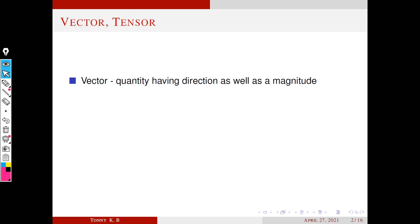What is a vector? A vector is a quantity having direction as well as magnitude. For example, velocity is a vector because velocity contains two quantities: one direction and one magnitude.